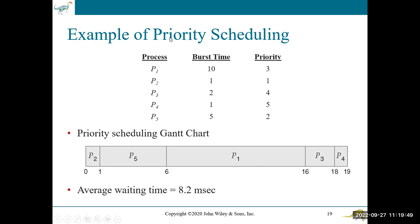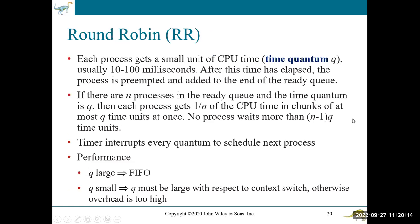Before priority scheduling, we reviewed a couple of other common scheduling algorithms. One is called First Come, First Served. Does anybody remember First Come, First Served? And another is Round Robin. So there are actually two contexts for Round Robin.